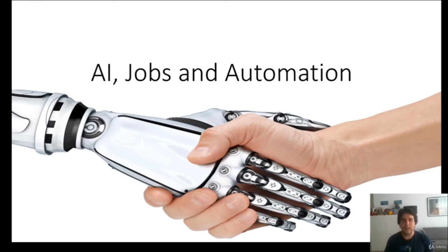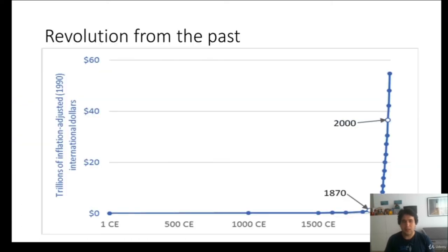Hello and welcome again to the new lecture. Today we will talk about how AI impacts jobs and automation, and how the future will look for us in terms of the job market and economy. Let's start by looking at a chart of how the economy has looked through the past. The Earth was very poor — people were living on very minimal amounts of value throughout most of our history until the end of the 19th century. Then at the end of the 19th century the industrial revolution happened and from the 1870s we have had a spiral growth of the value created in the economy.